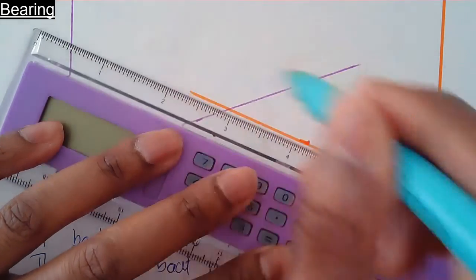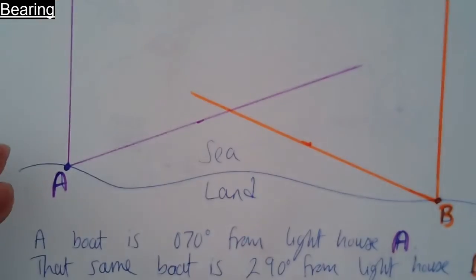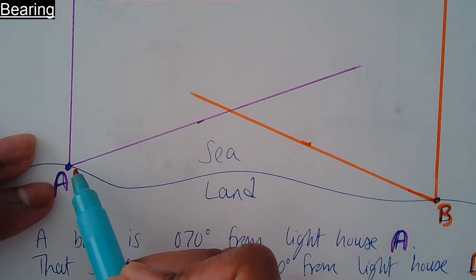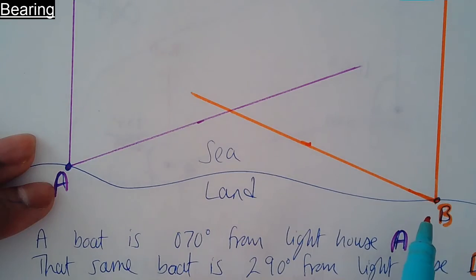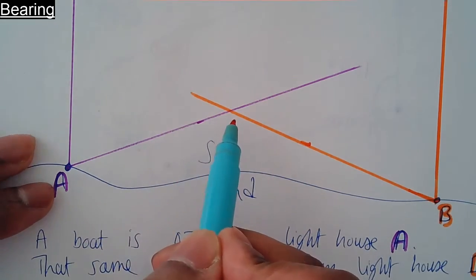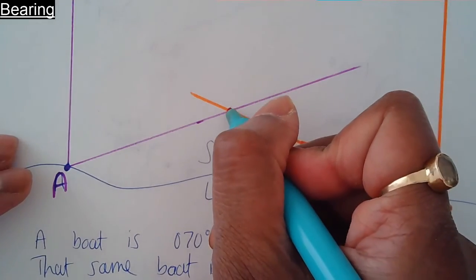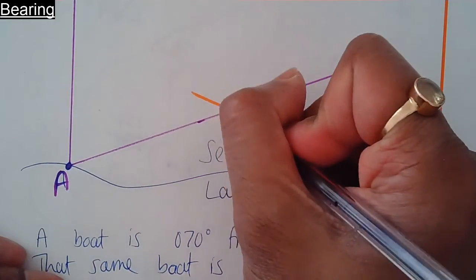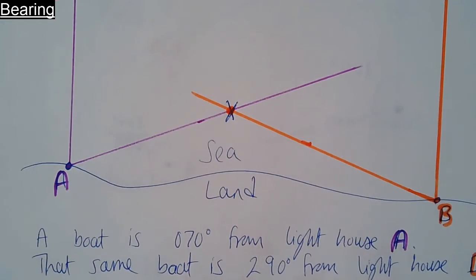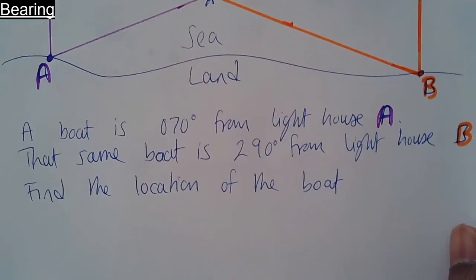I did say that boat lies somewhere along this purple line, and I could also say that boat lies somewhere along this orange line. But where the two lines intersect, that's where the boat is. So we found the location based on the two clues.